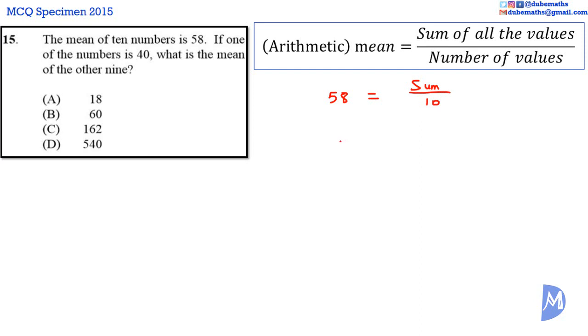And we can solve for sum. To remove the 10 from the right hand side to leave sum alone, we multiply by 10 on both sides. 58 multiplied by 10 is 580. And when we multiply by 10 on the right hand side, the 10s would cancel to leave the sum. So we have the sum of the 10 numbers is equal to 580.